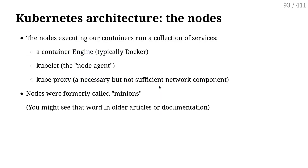Let's look more in depth at what we have on the nodes. Beyond the container engine itself, we have two services: kubelet and kubeproxy. Kubelet is a little agent whose job is to connect the node to the control plane. The kubelet connects to the control plane and says: 'Hi, I am node 2. I have two CPUs and 10 gigs of RAM and that much disk space. Do you have any containers that I should be running?' And then the control plane responds with which workloads to run — Nginx, a Java app, and so on. That's the role of kubelet.